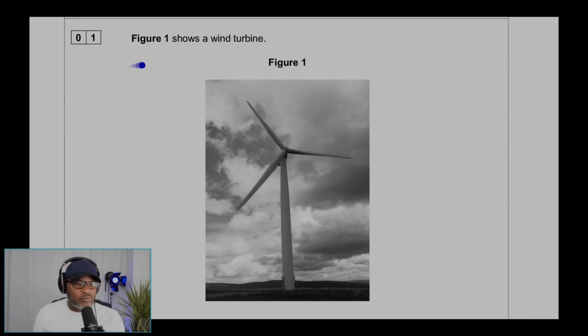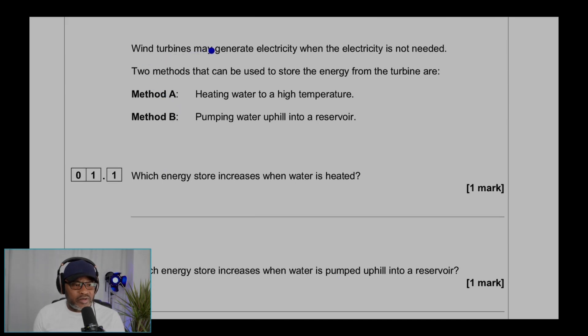Question 1, Figure 1 shows a wind turbine. Wind turbines may generate electricity when the electricity is not needed. Two methods that can be used to store the energy from the turbine are: Method A, heating water to a higher temperature; Method B, pumping water uphill into a reservoir.